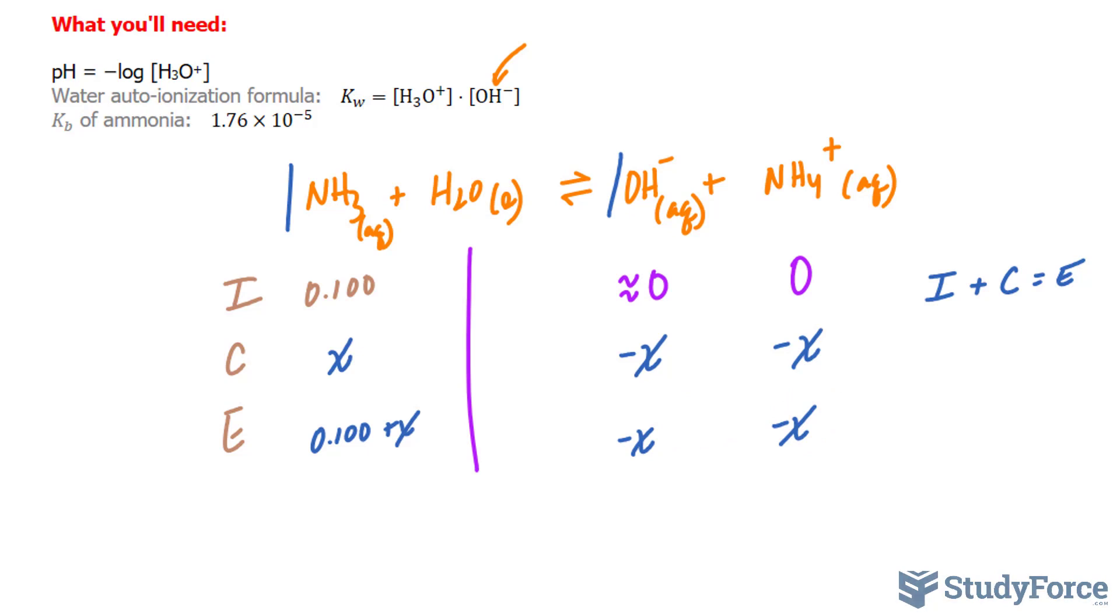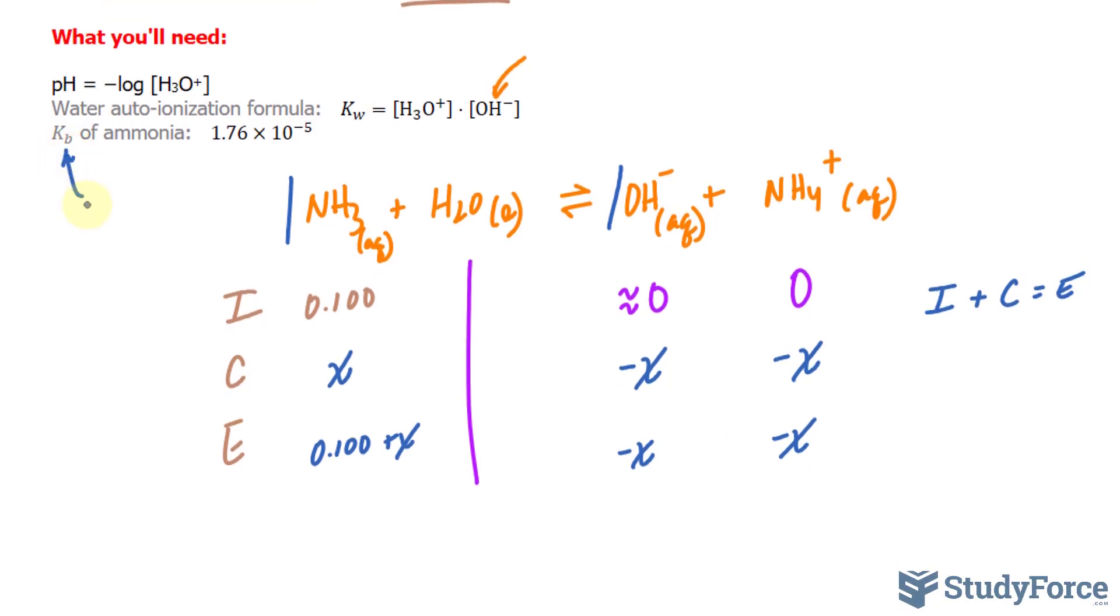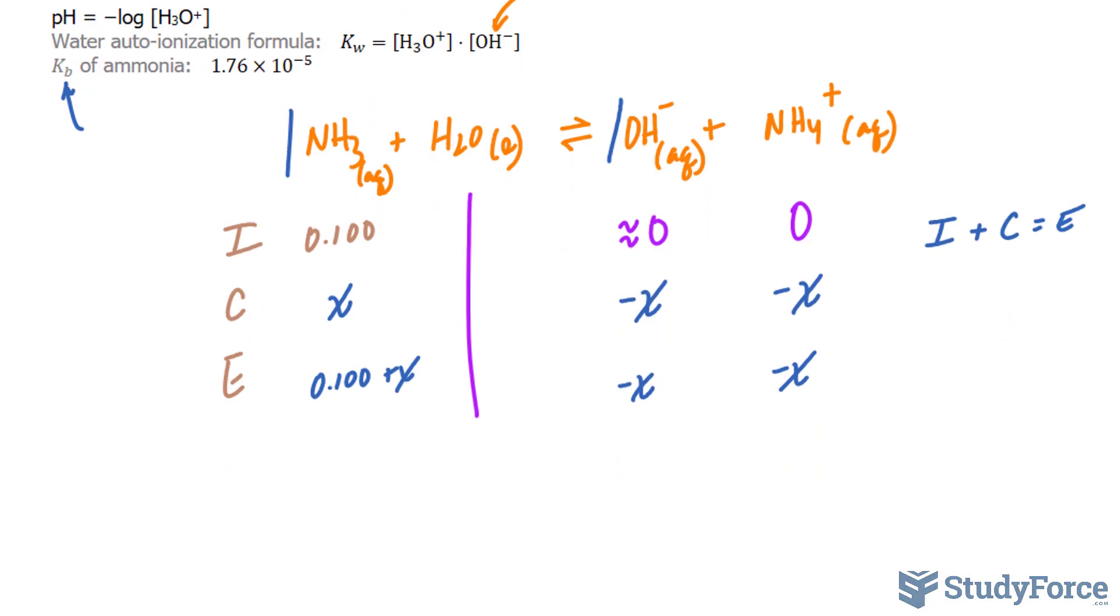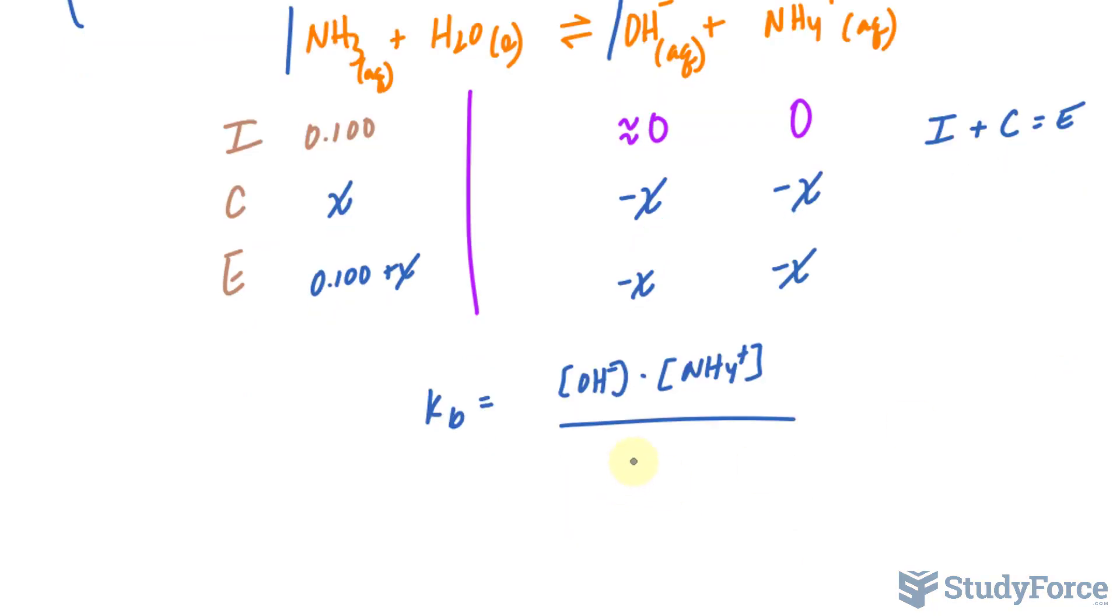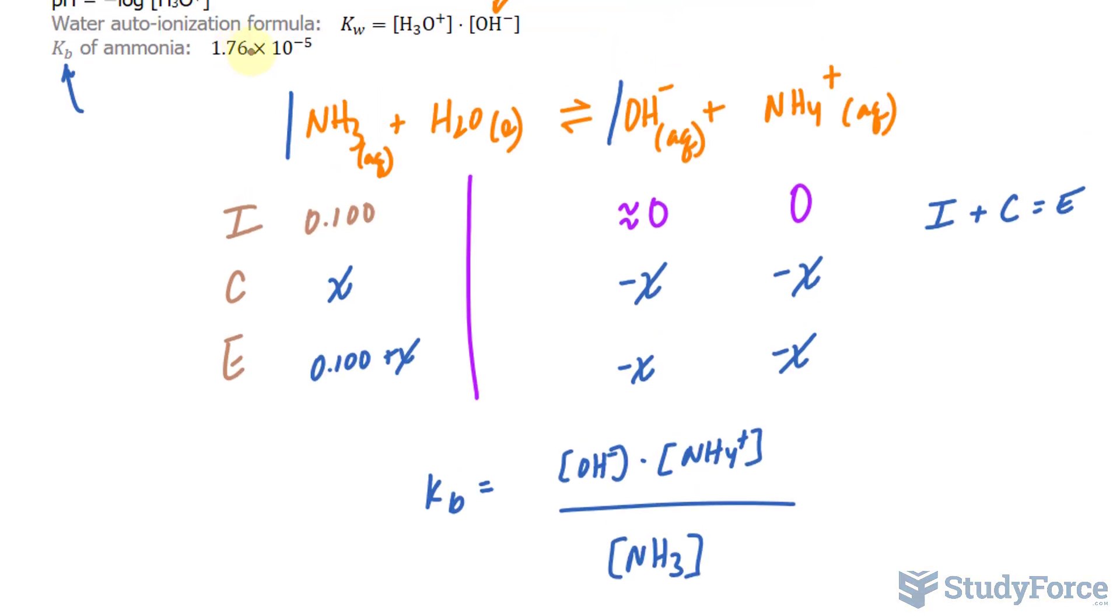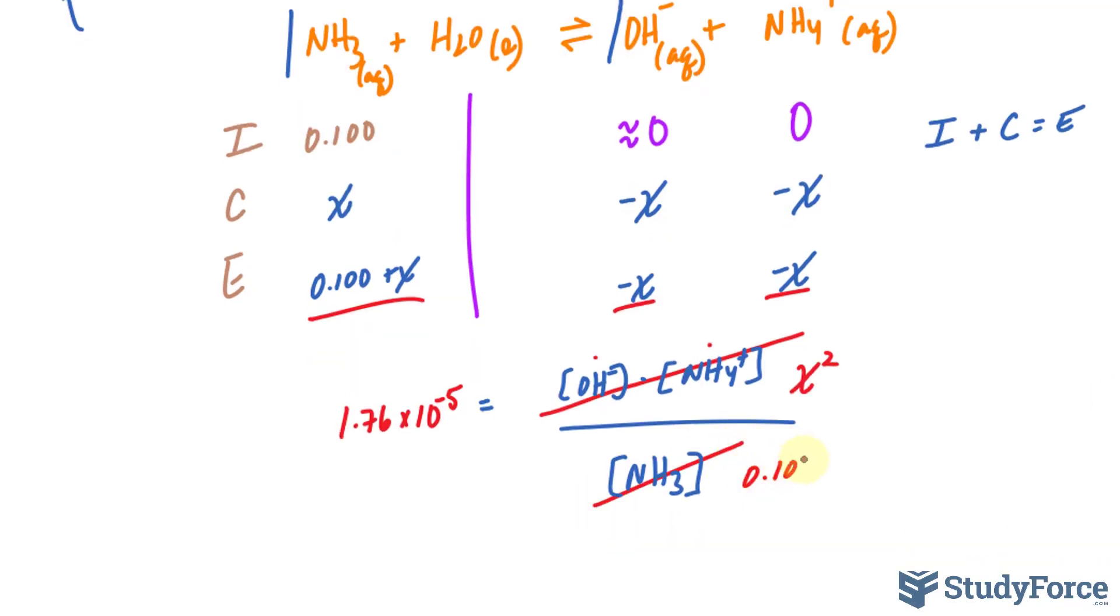We will write down the equilibrium expression. We already know what K sub B is, the constant. It's 1.76 times 10 to the power of negative 5. So I'll write down the expression KB equals the concentration of OH minus times the concentration of NH4 plus over the concentration of NH3. We don't include H2O because it is in its liquid phase. Let's continue now, and we will substitute 1.76 times 10 to the power of negative 5 right into there. So negative X times negative X is X squared. This becomes 0.100 plus X.